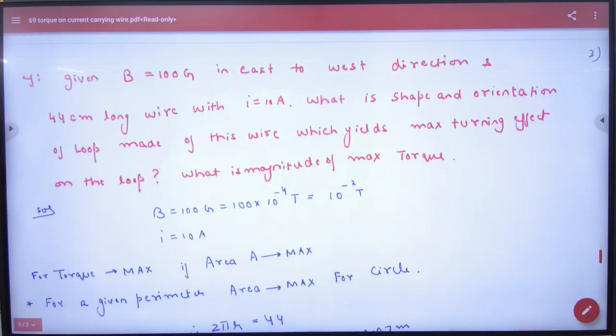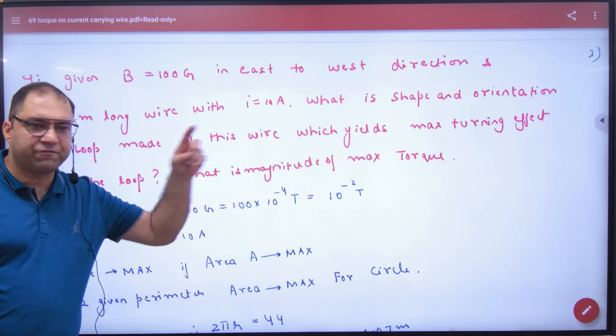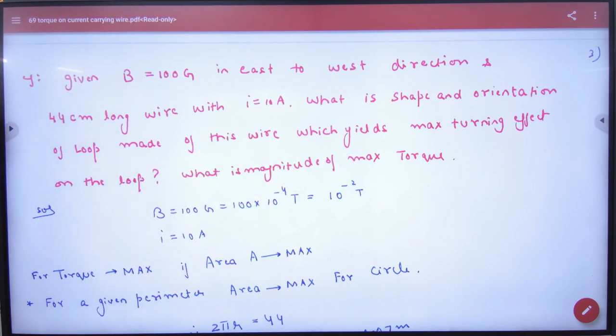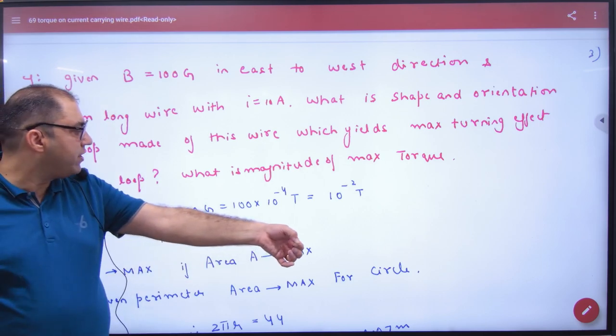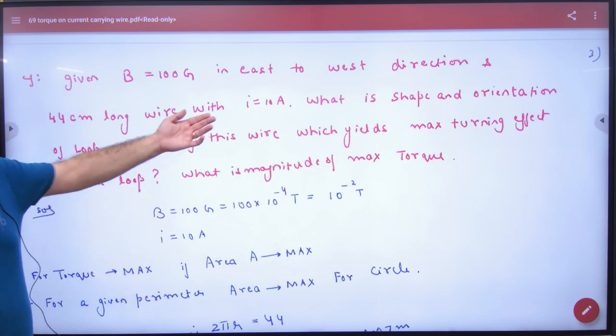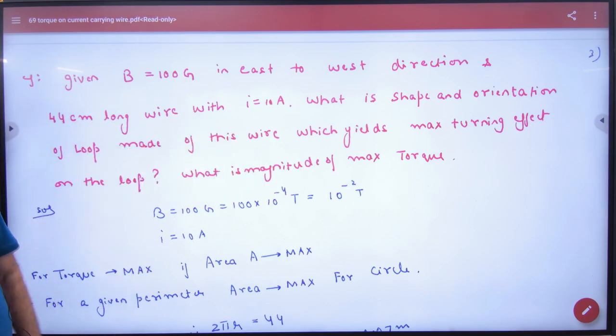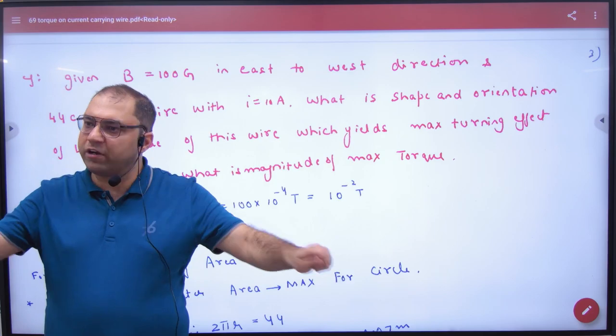Given B is 100 Gauss. The Gauss is 10 to power minus 4 Tesla, east to west direction. 44 centimeter long wire with current given. What is shape and orientation of loop made of this wire which yields maximum turning effect? Maximum turning effect means maximum torque. So he says take me. How long is it? 44 centimeter long.